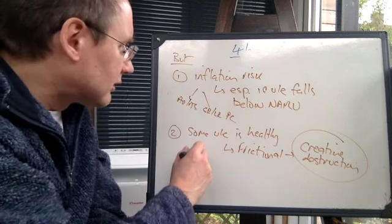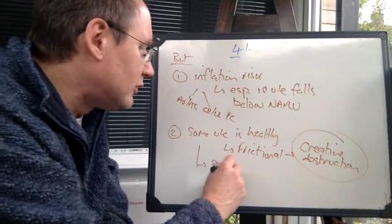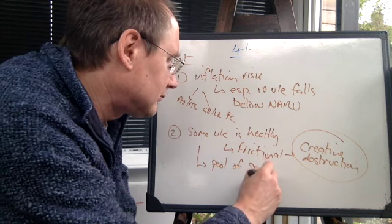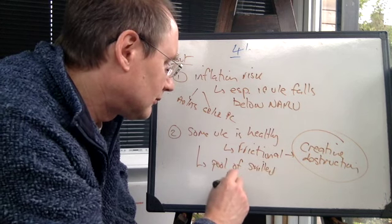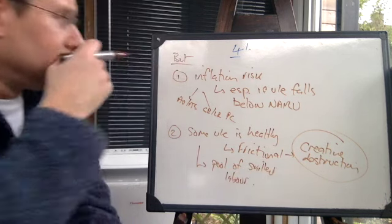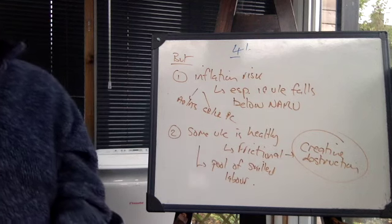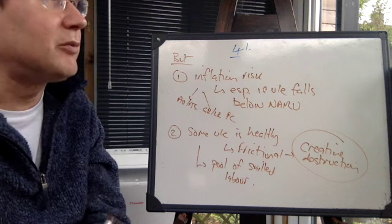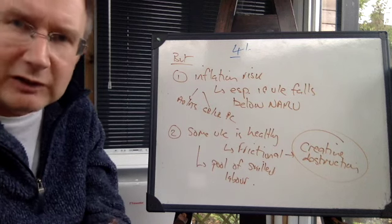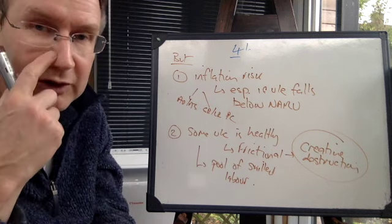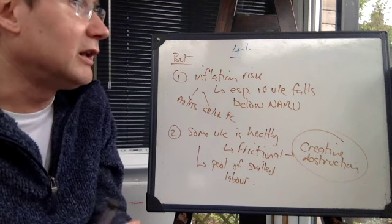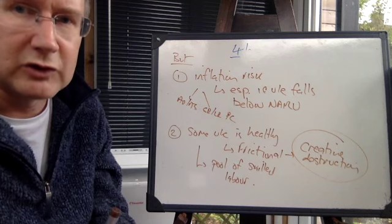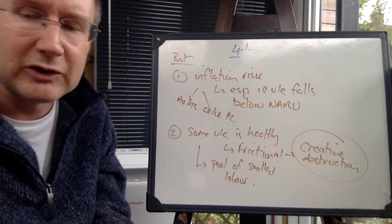And it also means that for new start-ups, there's a pool of skilled labour. You might also argue that it depends on why unemployment is falling. So if people, for example, are simply leaving the workforce because they become discouraged, then really unemployment isn't actually falling, not in any meaningful sense. You've just got discouraged workers, you've got sort of hidden unemployment, something along those lines.